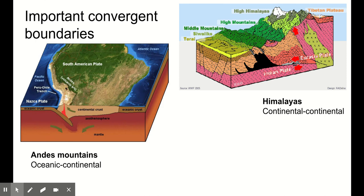Here's a continental-continental convergent boundary — this formed the Himalayas. We've got the Eurasian Plate smashing into the Indian Plate, and eventually the Indian Plate looks like it may be subducted underneath the Eurasian Plate. That hasn't happened yet, so we don't have any volcanoes forming yet. But we do have huge amounts of crust smashing into each other and crumpling up, forming our highest Himalayan mountains, including Mount Everest.